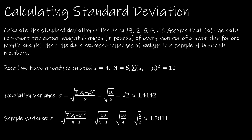Using the same data set, let's find the standard deviation. Part A assumes the data represent actual weight changes of every member of a swim club — that's a population. Part B assumes it represents the changes in weight of a sample of book club members — that's a sample.